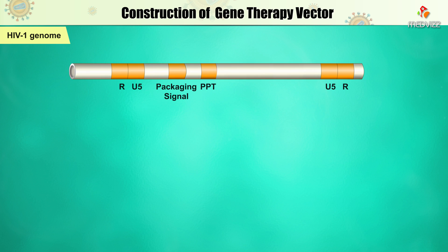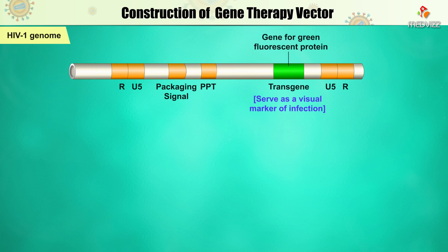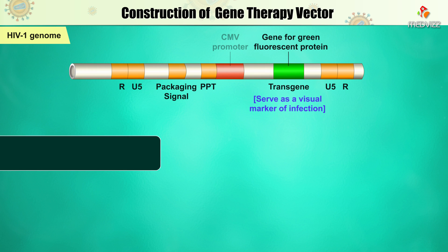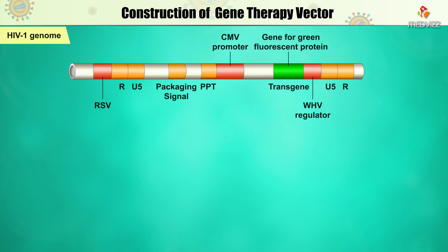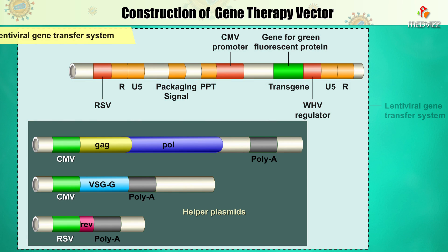The gene of interest, called the transgene, can be just about anything. As an example, a gene that encodes green fluorescent protein serves as a visual marker of infection. The transgene is put under control of a CMV promoter to further enhance transgene expression, and other genetic elements are also added. This combination of vectors is called a lentiviral gene transfer system.